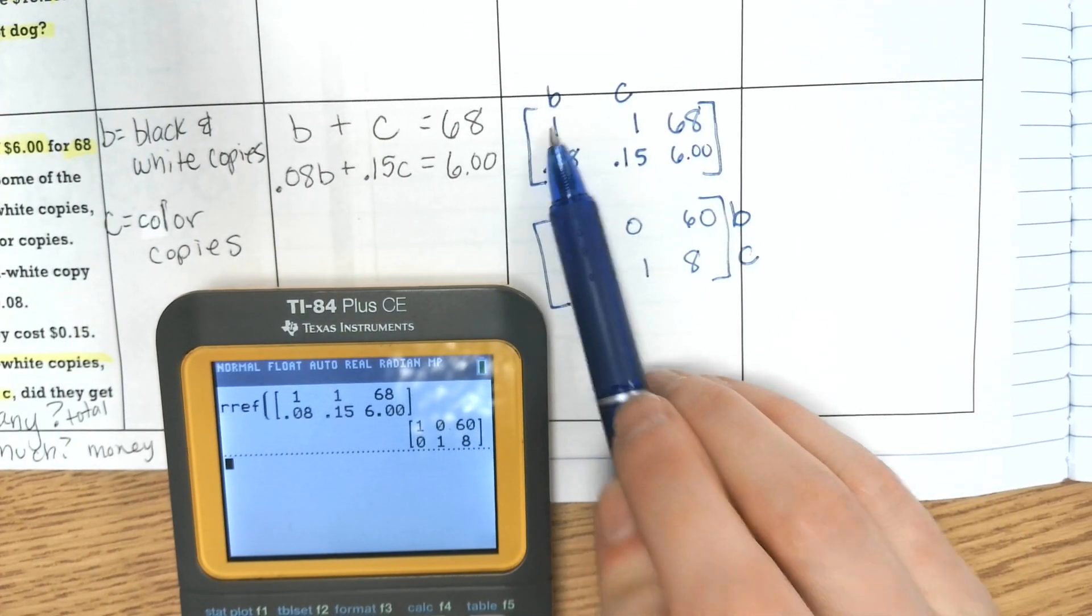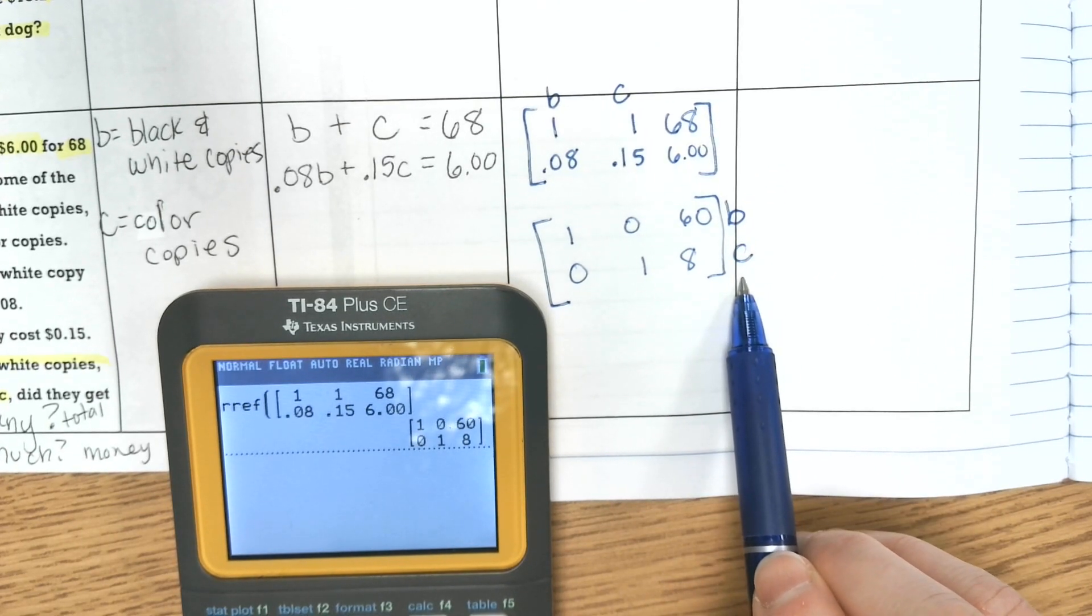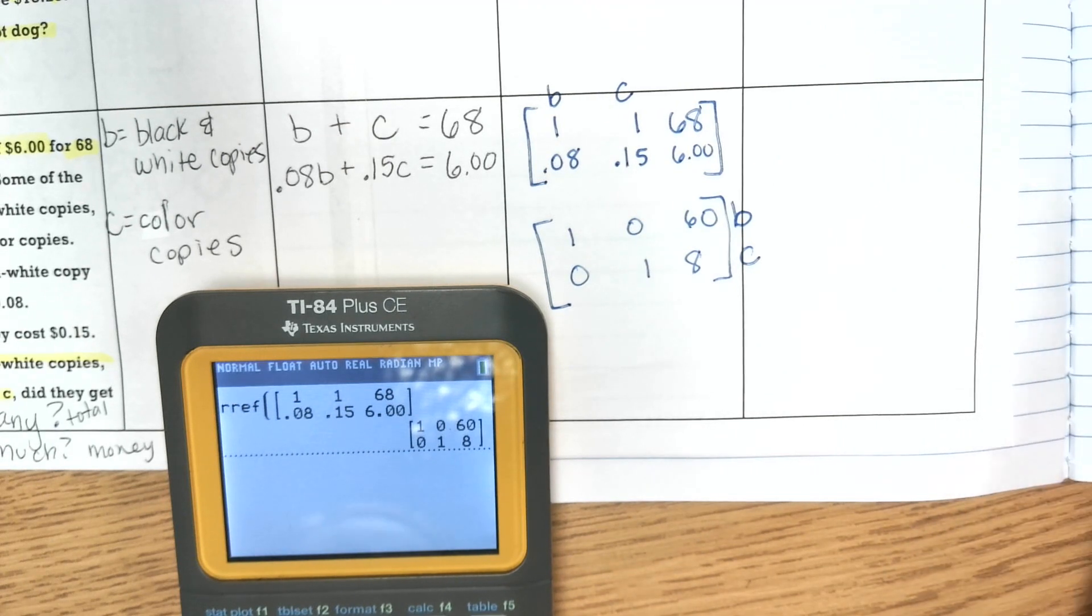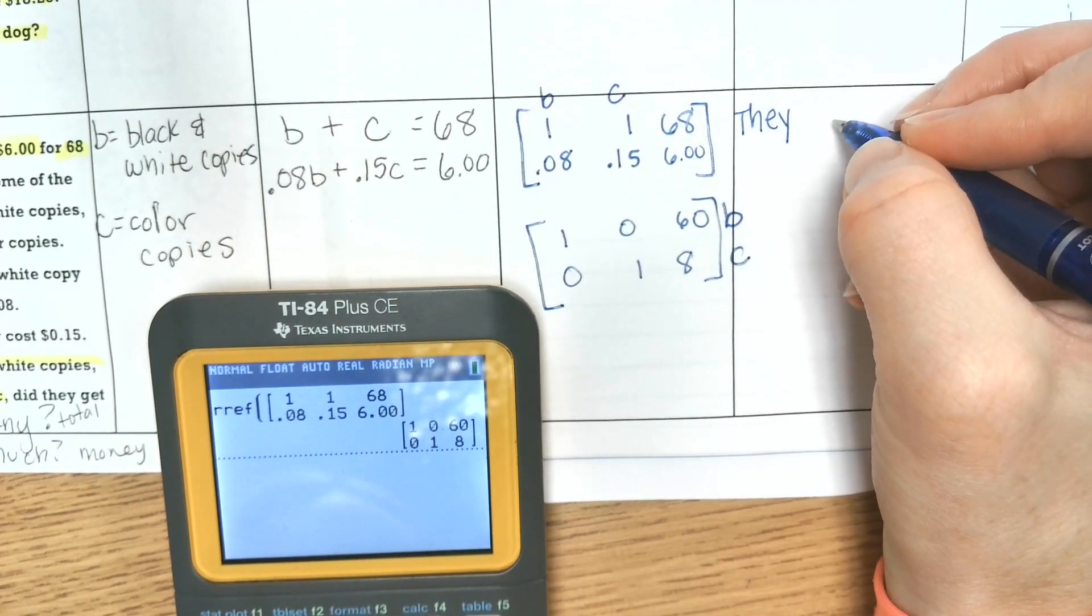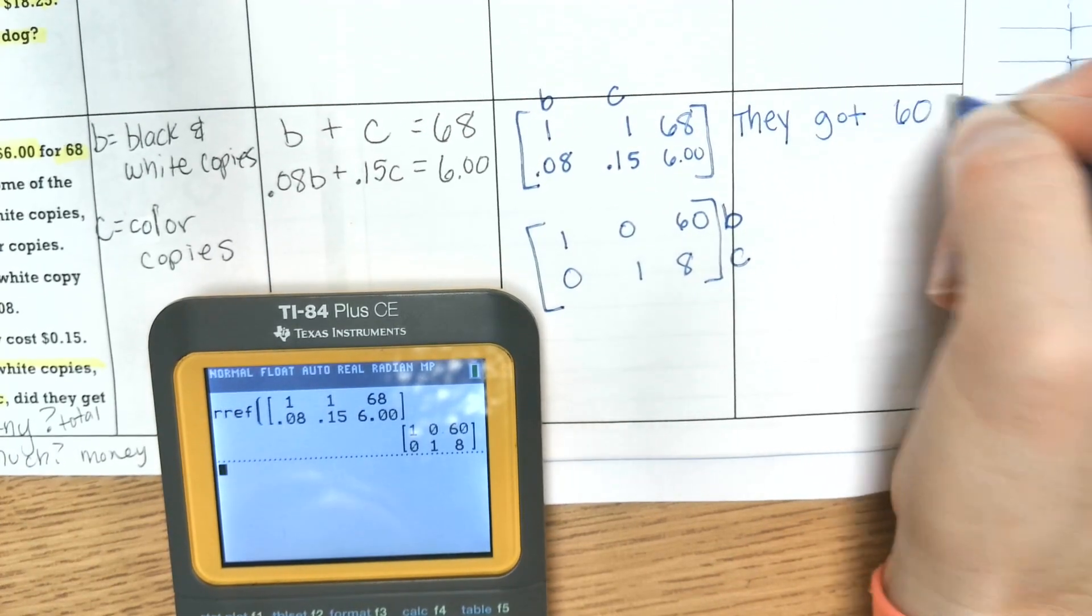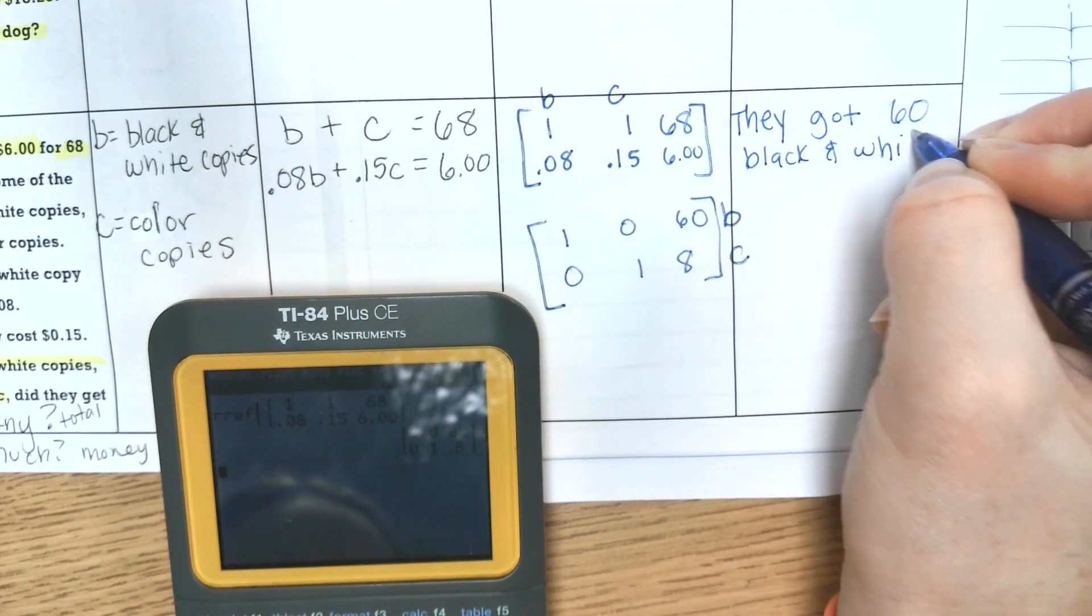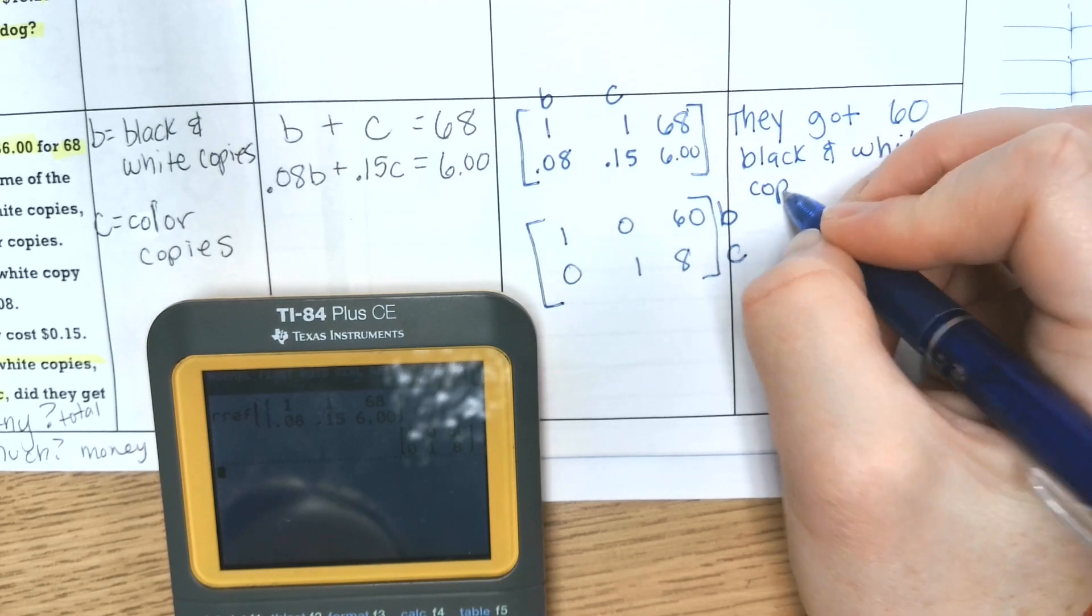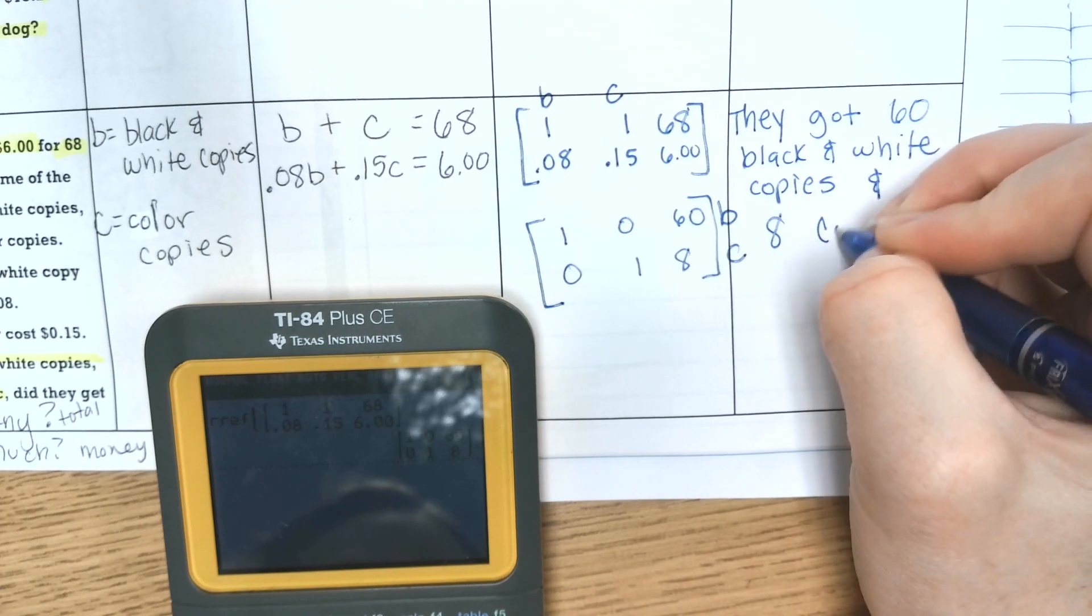So it asked how many black and white copies and color copies did they get? They got sixty black and white copies and eight color copies.